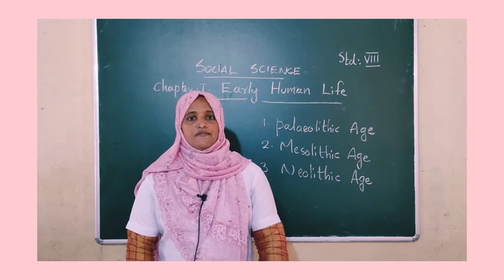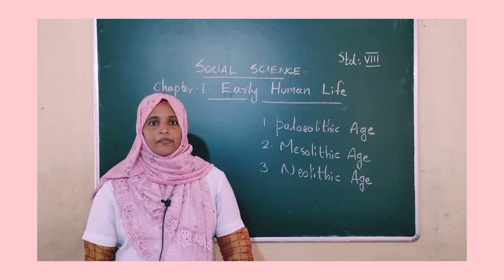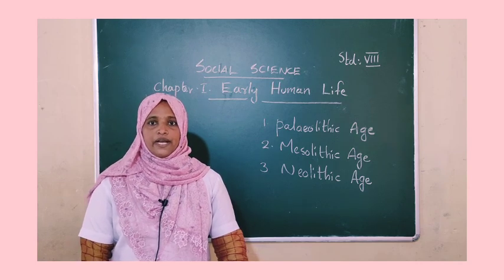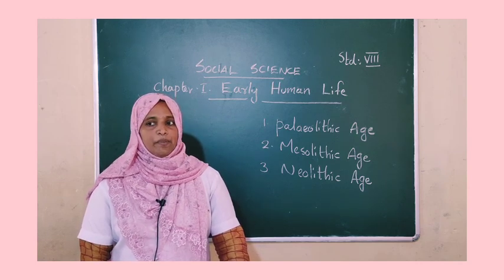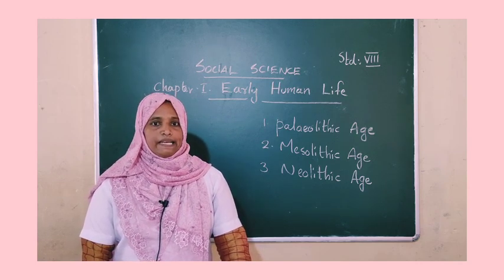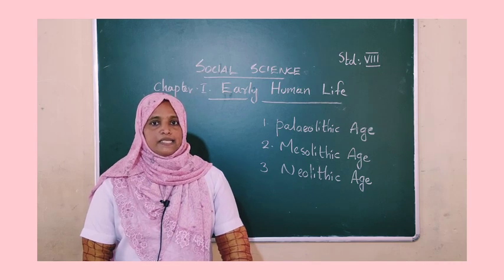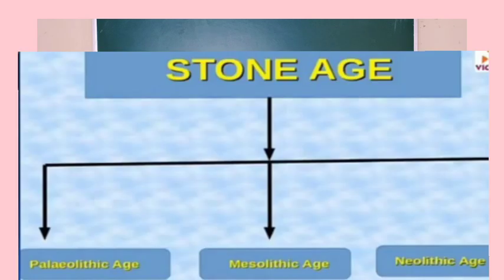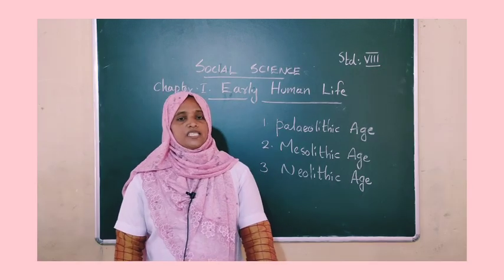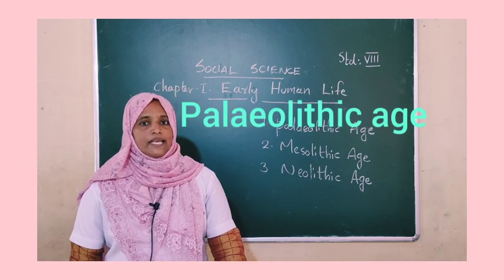Stone age can be classified into three. Do you remember? You have already studied this in 5th standard social science. Yes, that is the paleolithic age, mesolithic age, and neolithic age. Let us examine each one of them. First one is the paleolithic age.